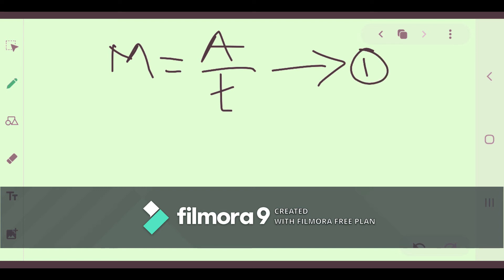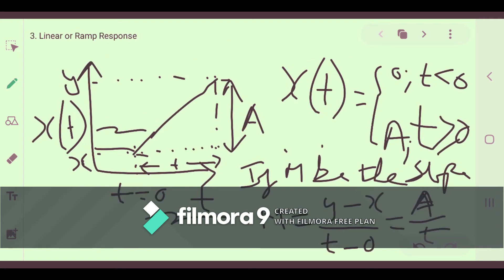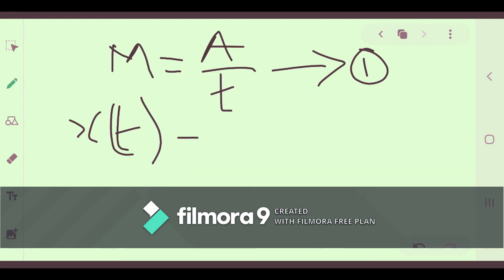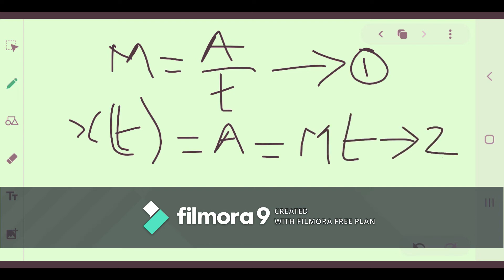For the region where x(t) is greater than or equal to 0, the function value is A. According to equation 1, A equals slope M multiplied by time t. This gives us equation 2: x(t) = M·t for t ≥ 0.